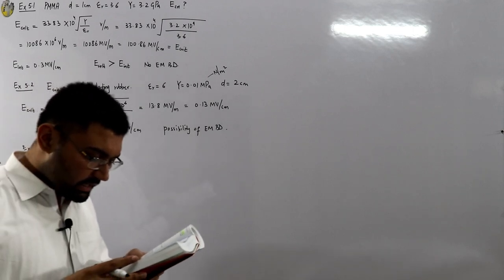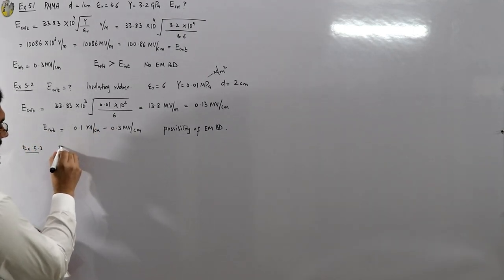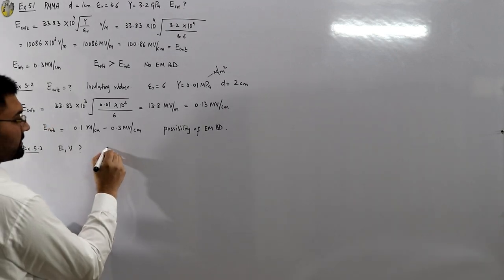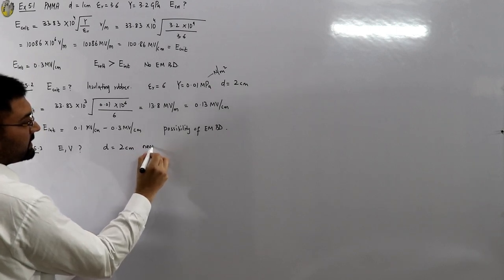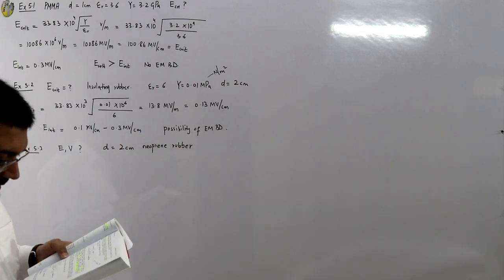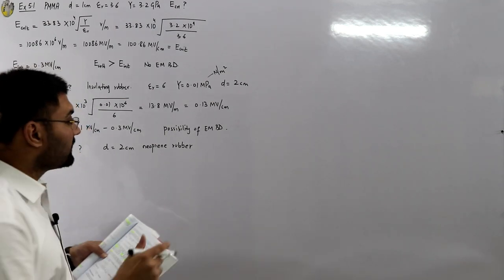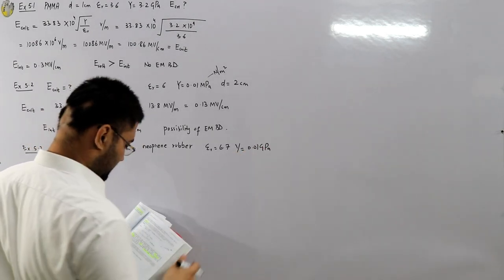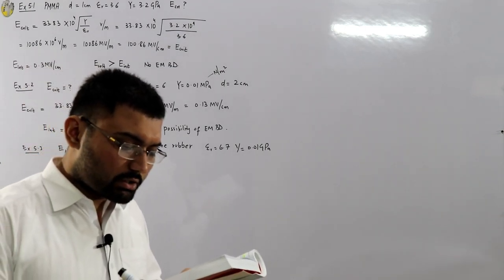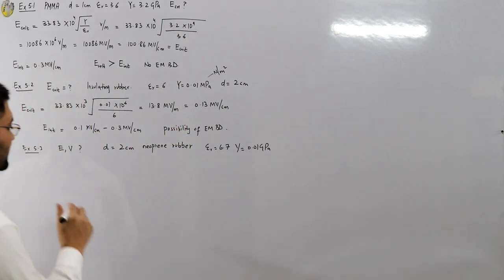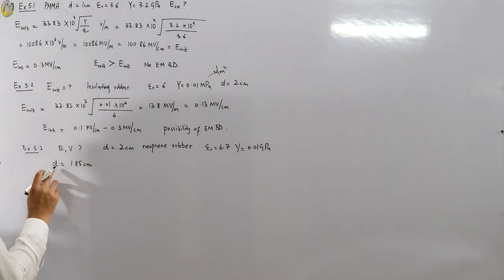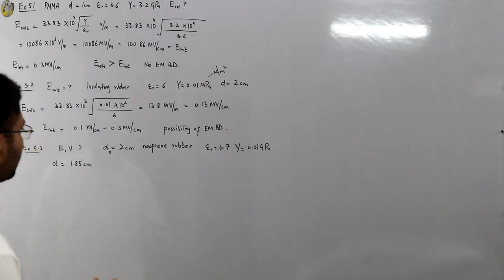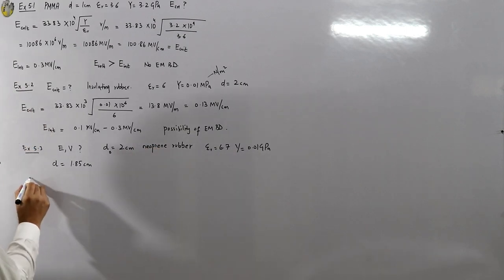Example 5.3 asks to find the electric field and voltage for a laboratory test under uniform field conditions on a two-centimeter-thick specimen of neoprene rubber with a dielectric constant of 6.7 and modulus of elasticity of 0.01 GPa. The specimen is held between two spring-loaded electrodes that compress it to a thickness of 1.85 cm — this compressed value is d.